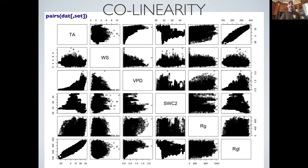So here's what I've done here is made what's called a pairs plot. I think we talked about these in the visualization lectures, where I've passed in the matrix of the data. This set here, that's the second argument in the square brackets, is just a character vector of the names of variables I was interested in. So I just wrote out set equals C colon TA comma wind speed comma VPD comma soil water content comma RG, RGL, and just passed those column names in. So it just gave me those columns, and it made up all the pairwise scatter plots.